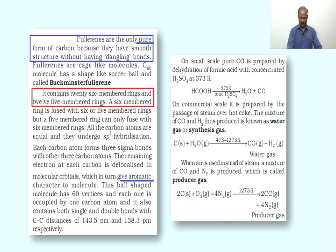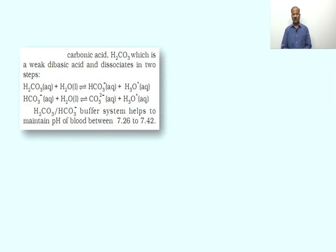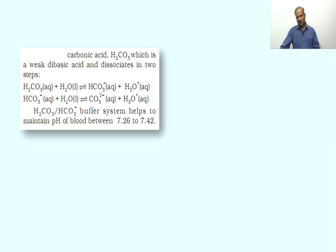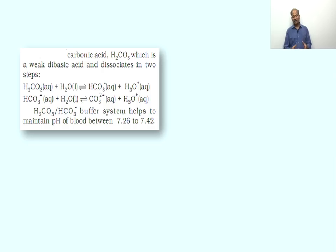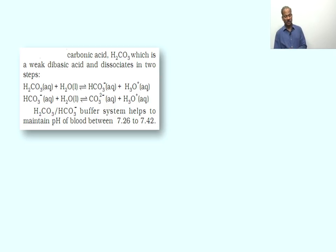An important compound of carbon is carbonic acid, H₂CO₃, which is a weak dibasic acid. When CO₂ is dissolved in water, H₂CO₃ is produced. H₂CO₃ undergoes first-stage ionization to produce bicarbonate ion, and bicarbonate ion further ionizes to produce carbonate ion. Any system having carbonic acid and bicarbonate ion acts as a buffer system, and this type of buffer system helps to maintain the pH of blood between 7.26 to 7.42.